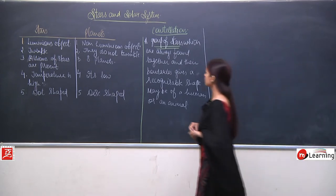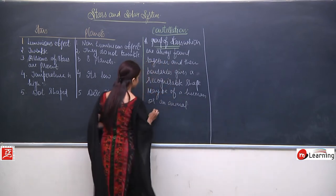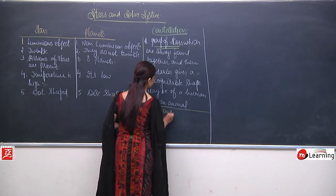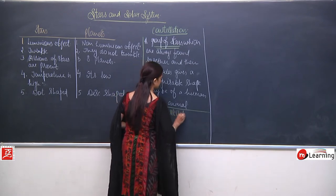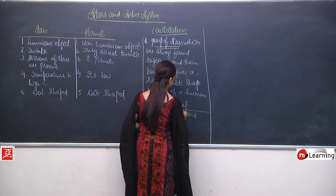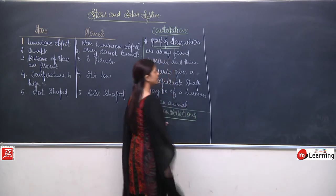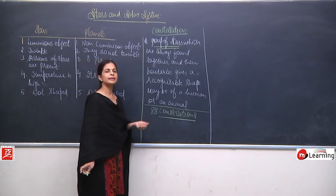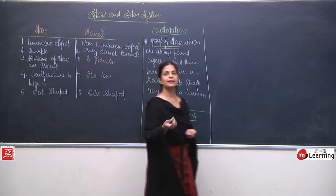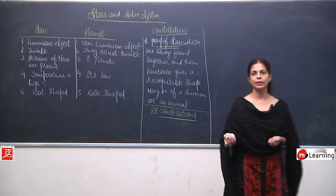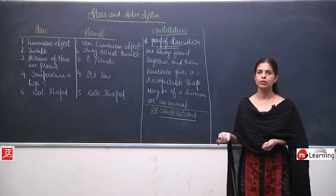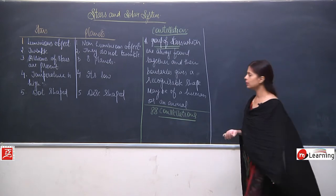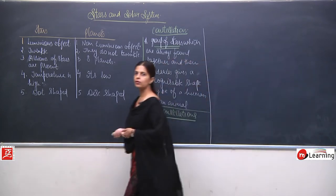In all, there are actually 88 constellations found so far. Few are in the northern sky and few are in the southern sky. We will discuss only 3 to 4 constellations which are very important — we are not going to discuss all 88.